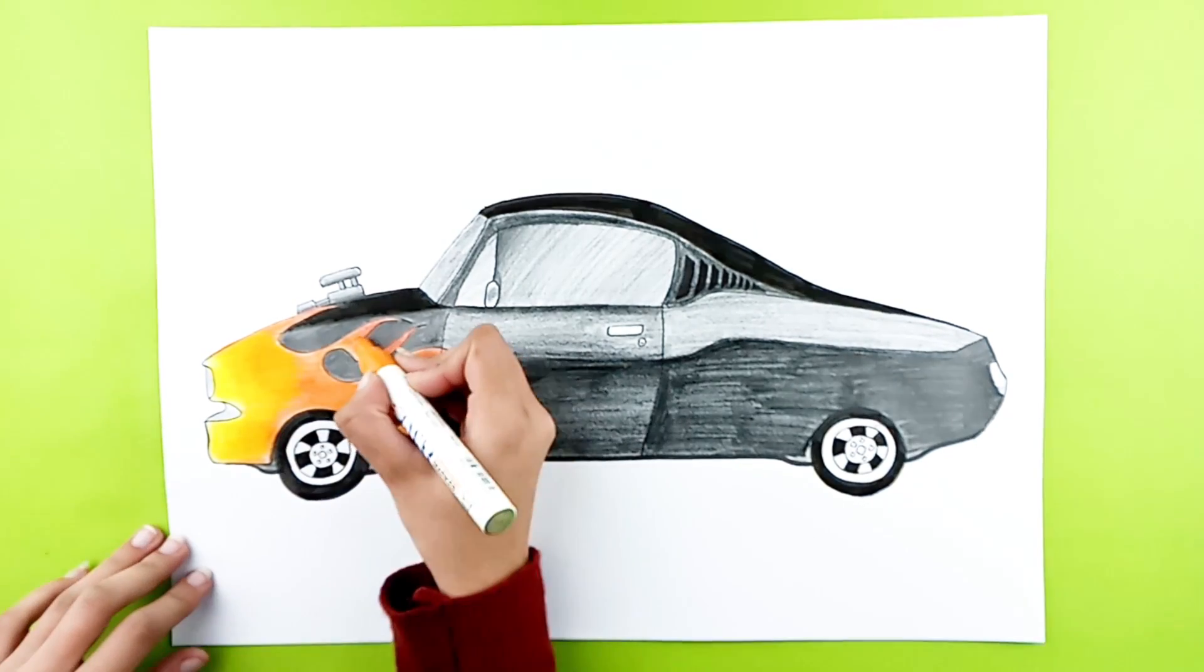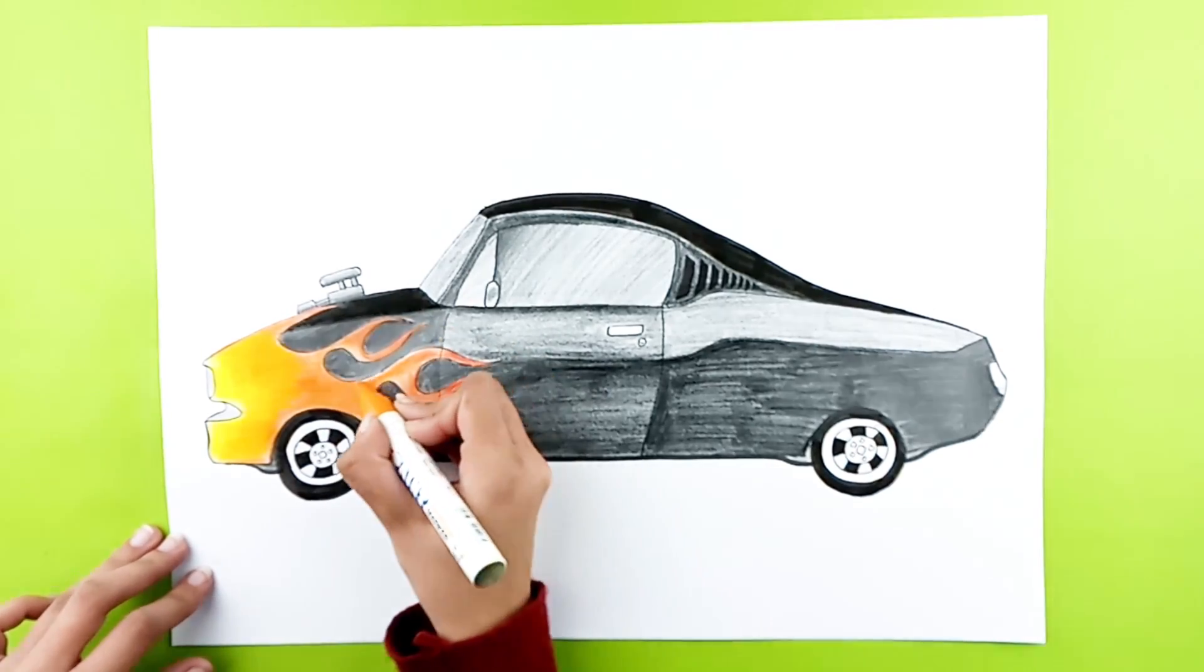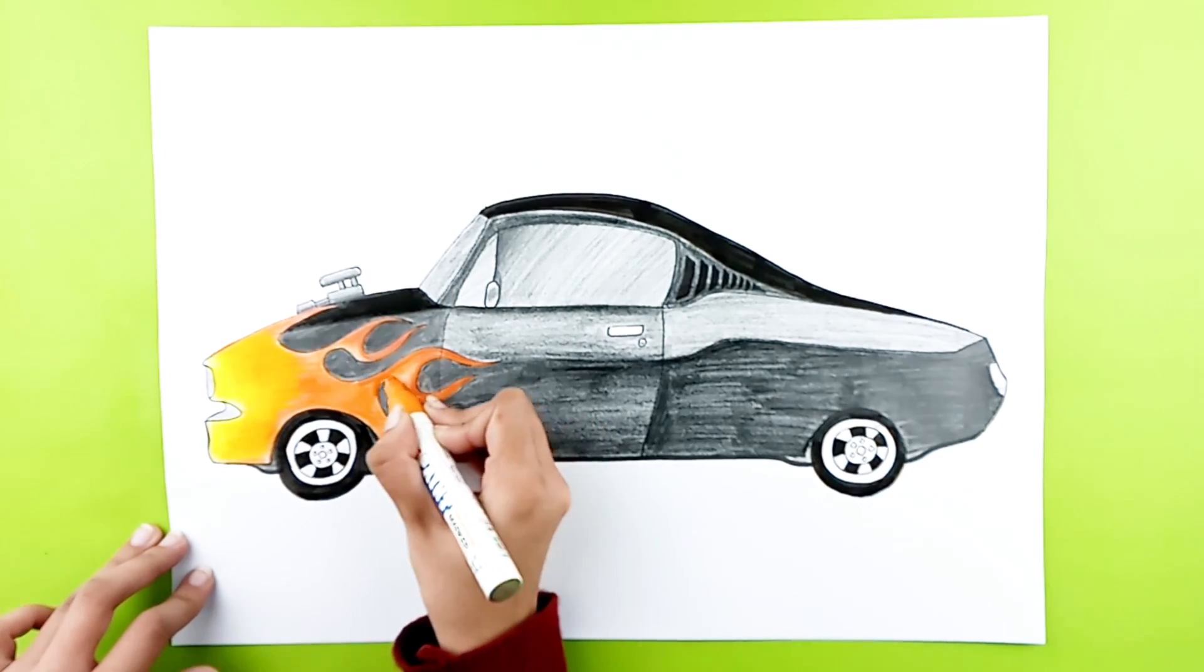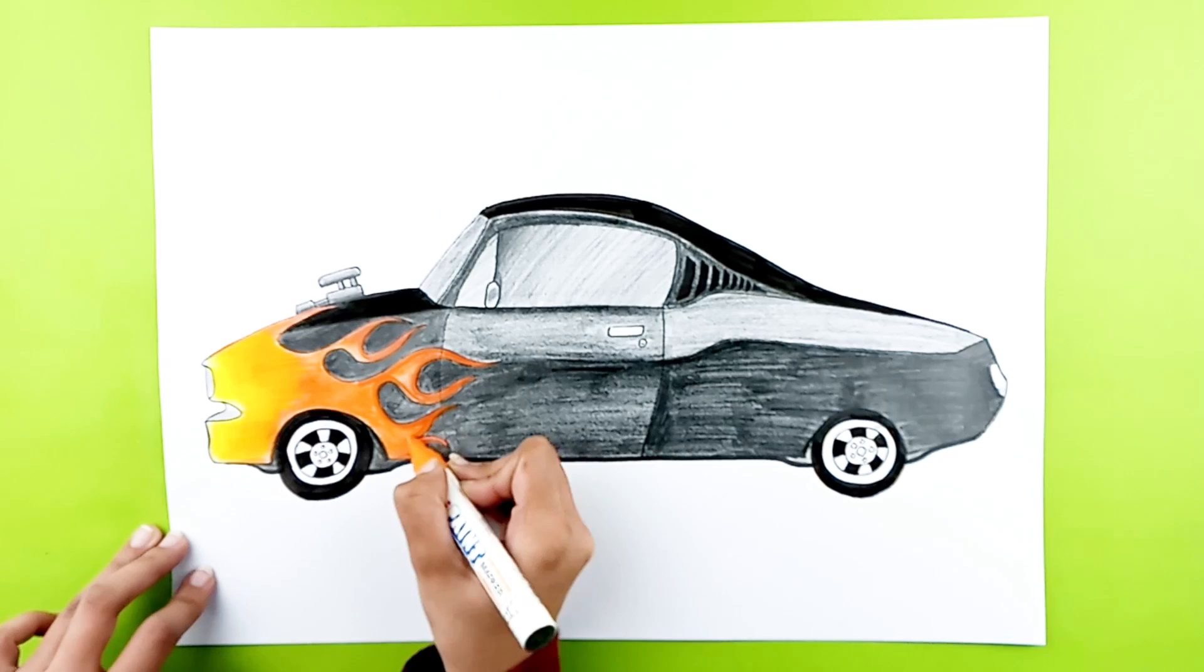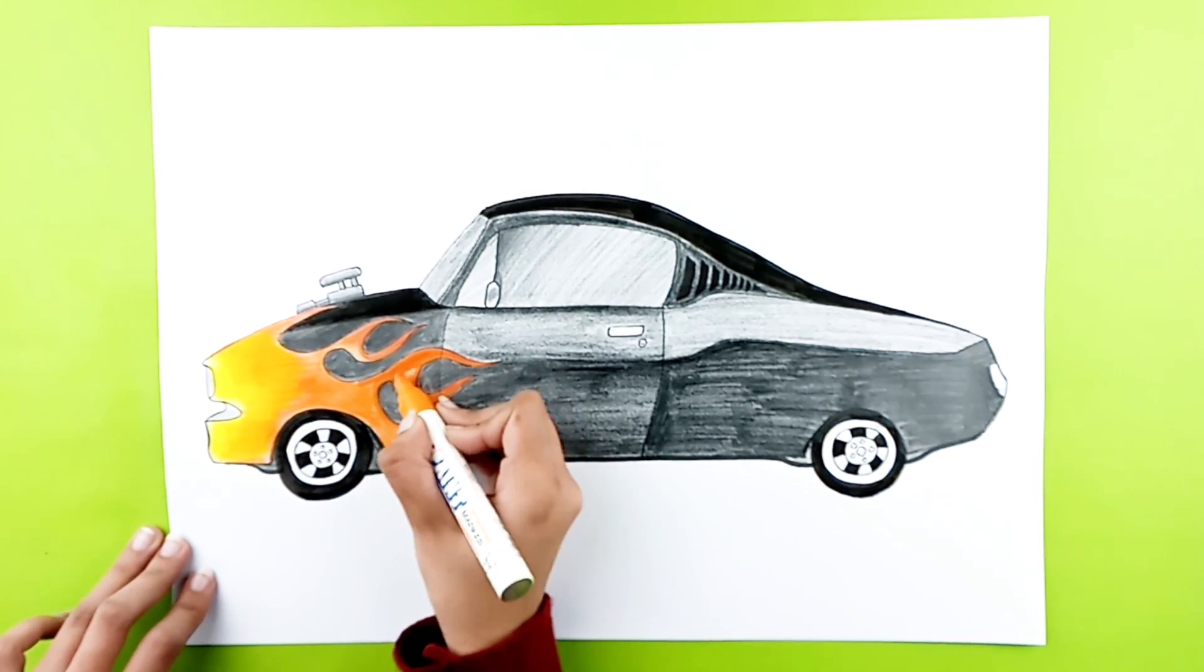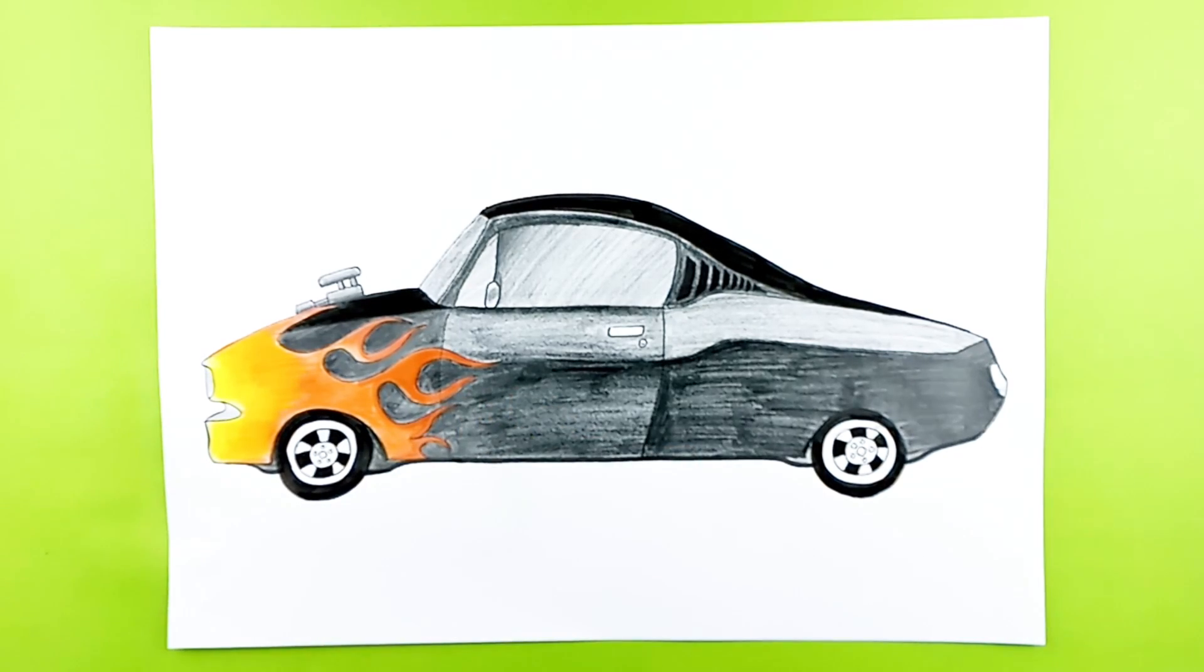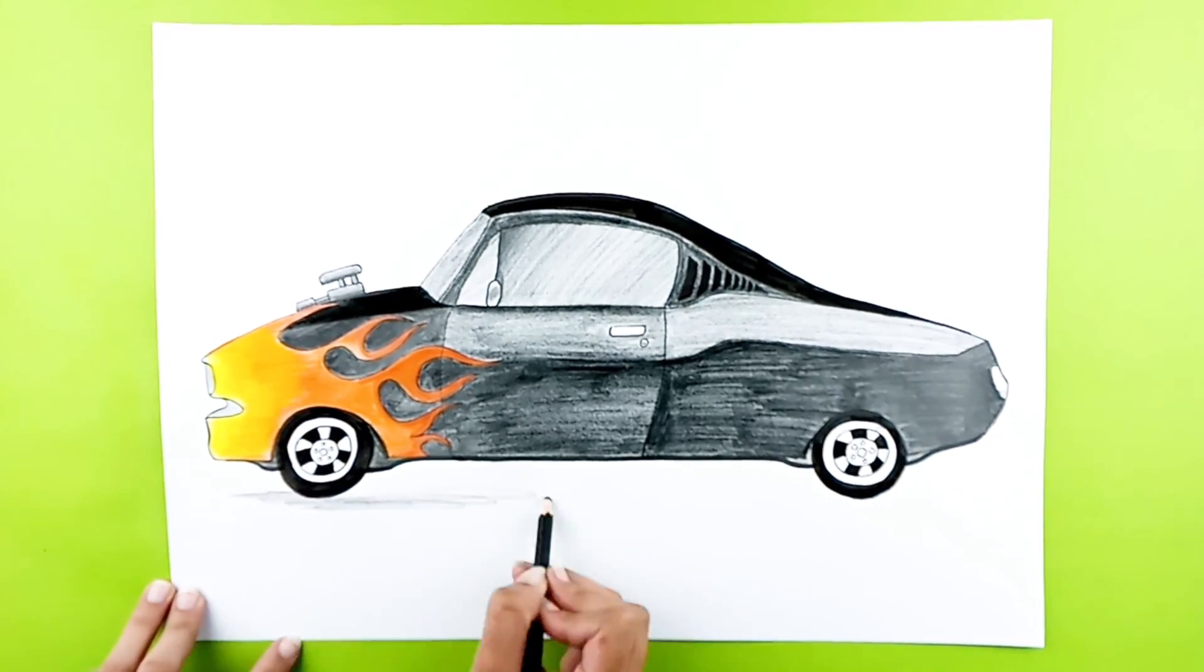Using an orange marker, go over the details of the flames. And finally, use a grey pencil to color the shadow of the car underneath the car.